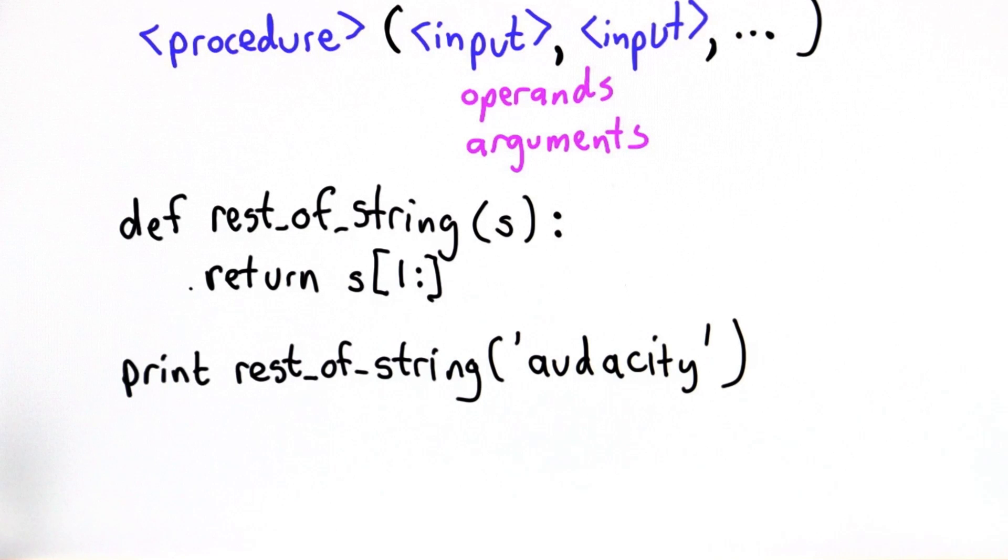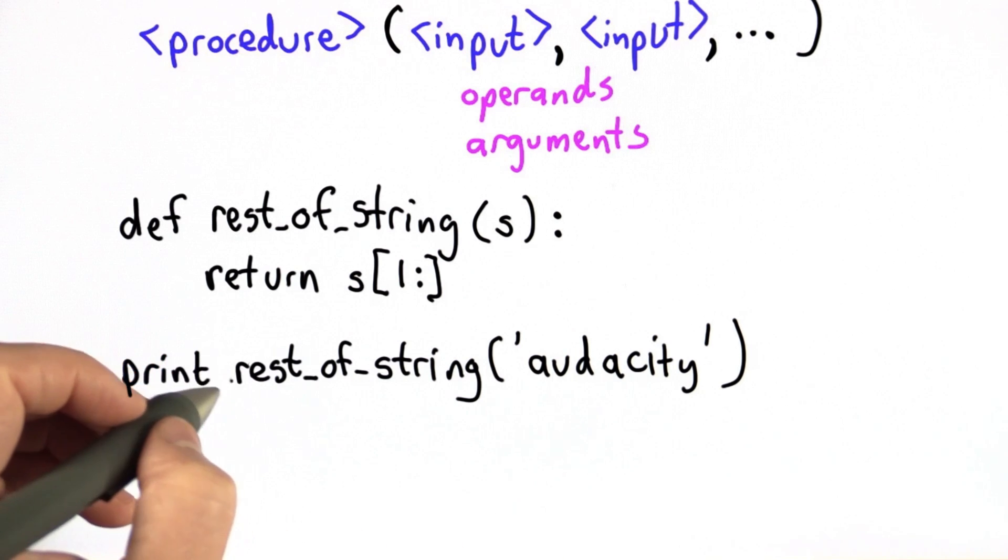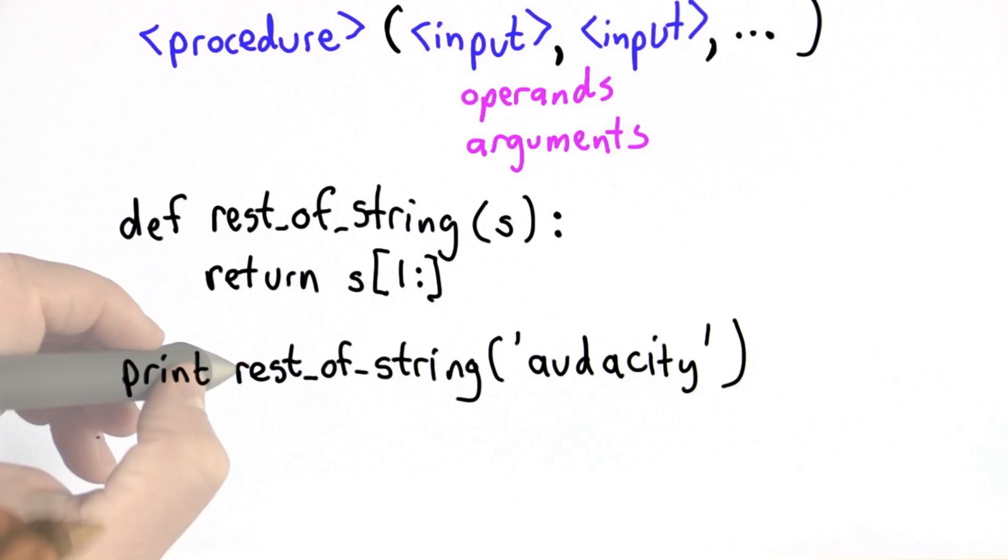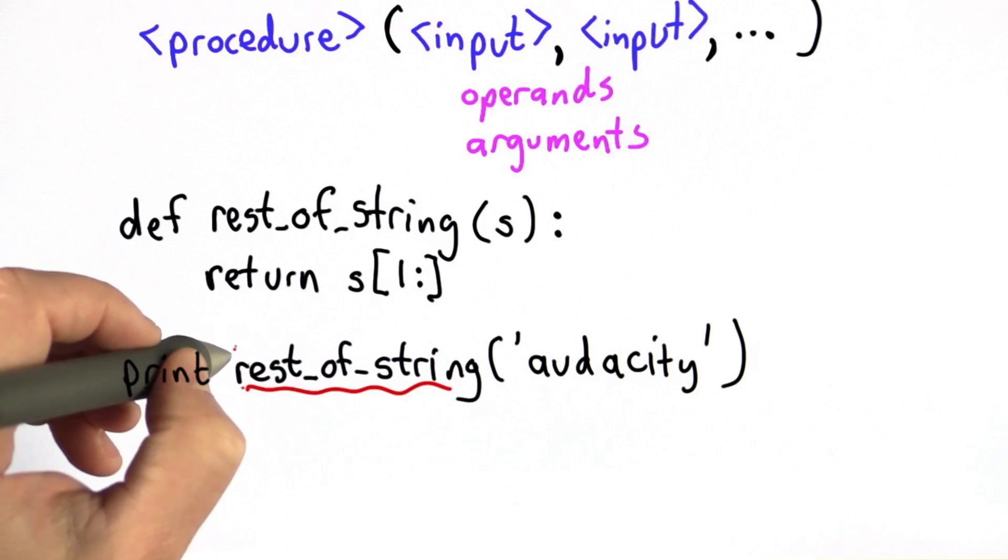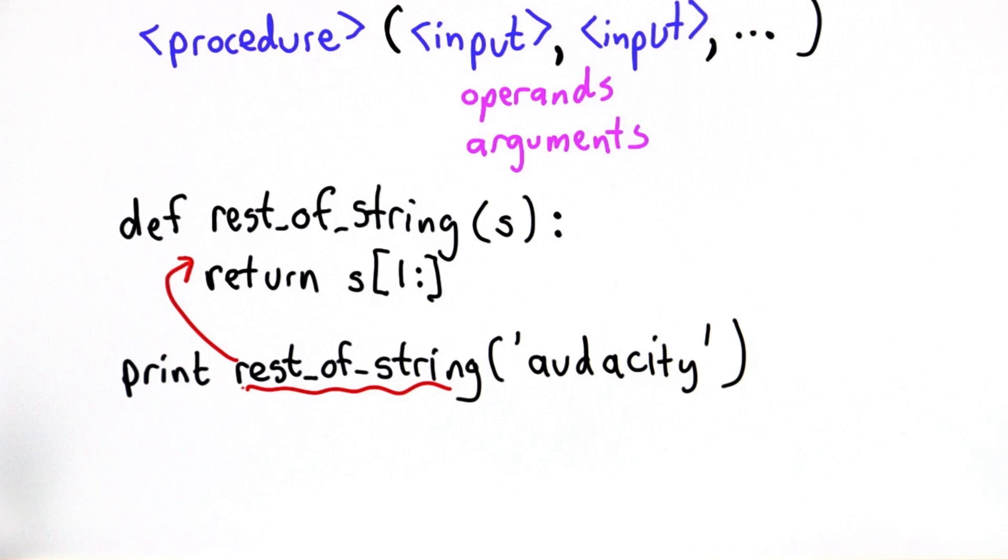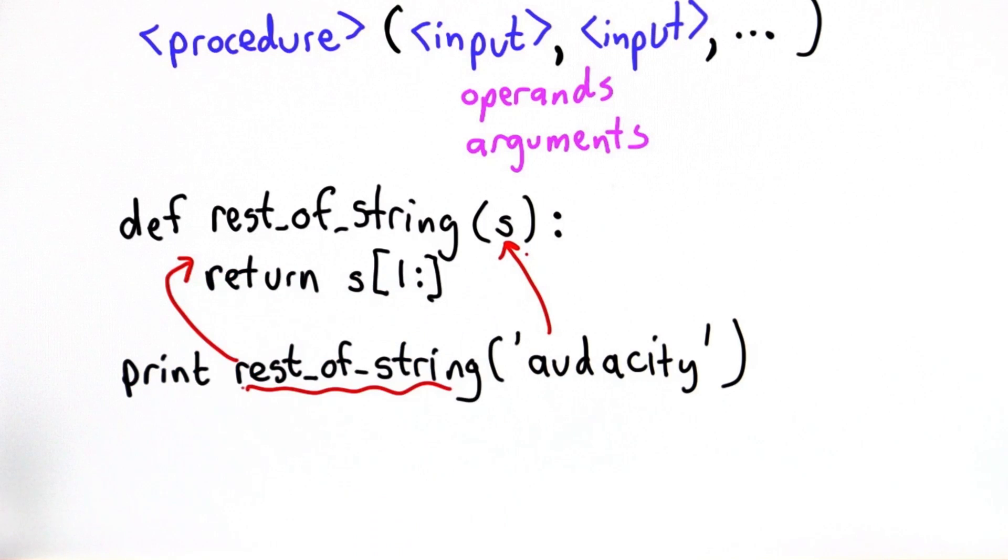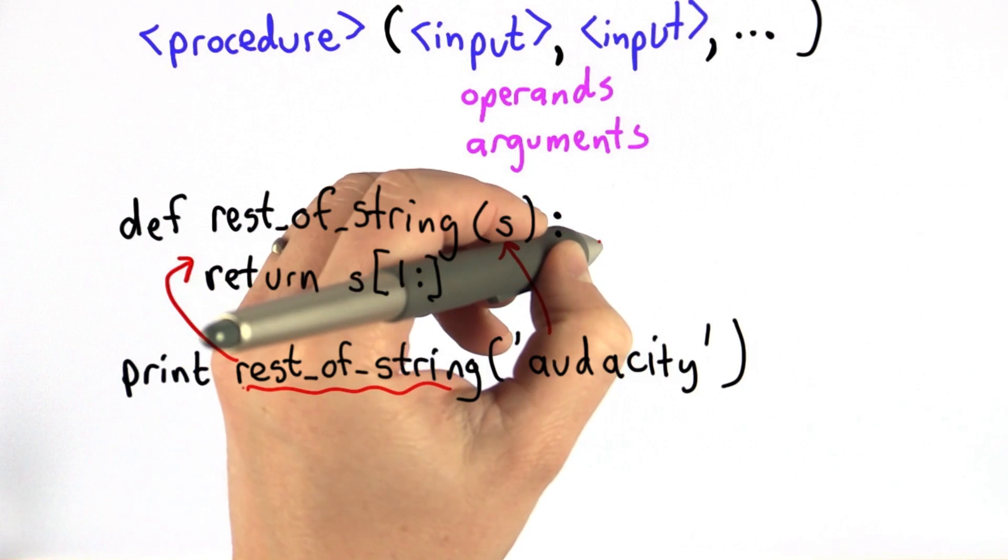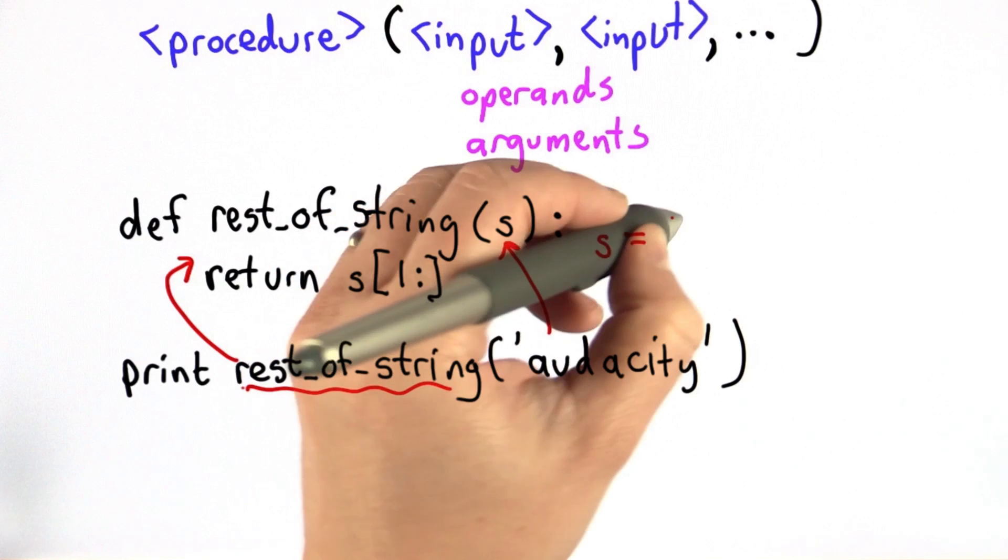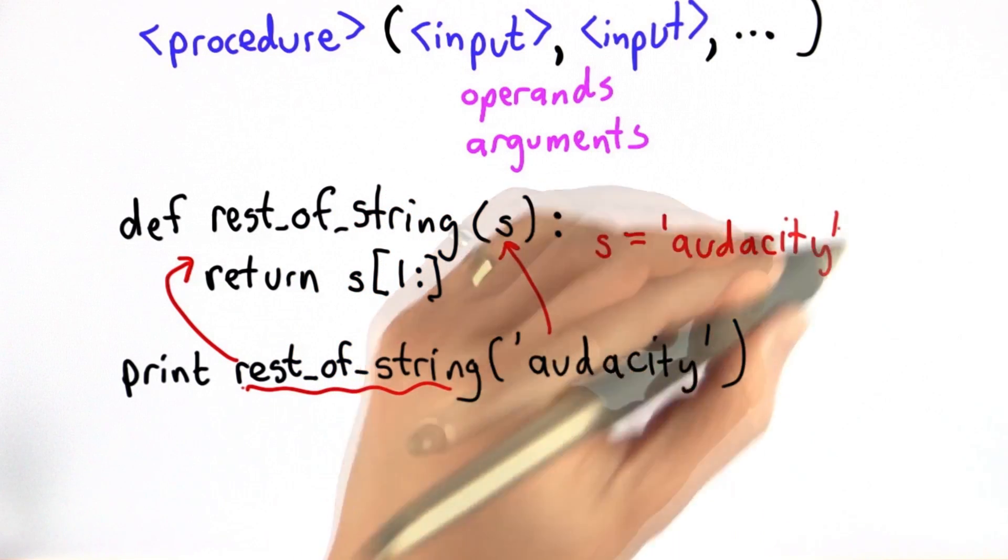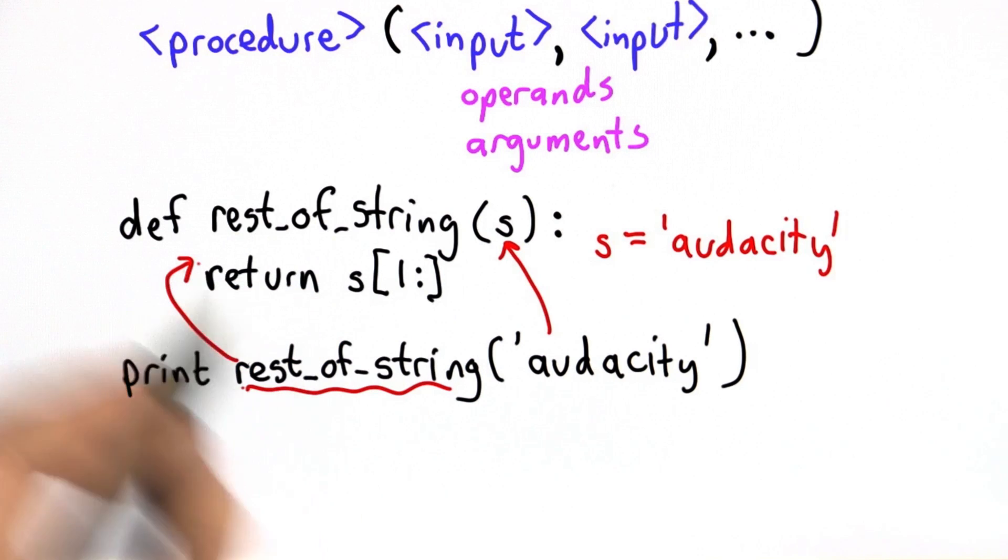What happens when we call a procedure like this? Execution will jump into the body of the procedure. So we can think of what the interpreter is doing is now, instead of running the code here, the interpreter will move. When we call a procedure, it will jump to run the code inside the procedure. It will assign to the parameters the values passed in as the inputs. So we can think of this as there being an assignment that says, now the value of s is the value of this input that was passed in. And now we're going to evaluate the body of the procedure.